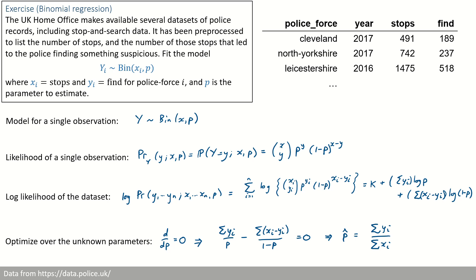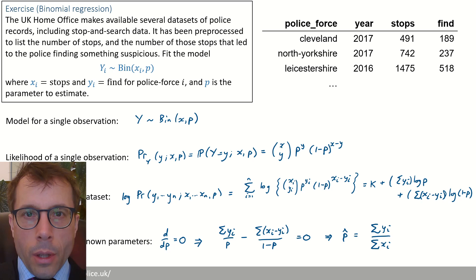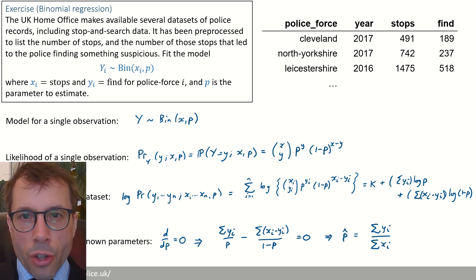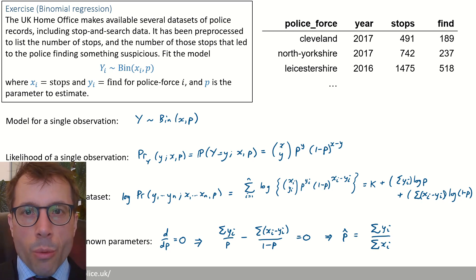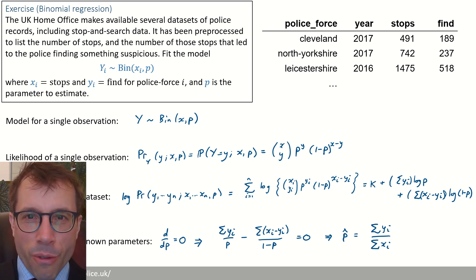Let's do a quick sanity check on the answer. Xi was the number of stop-and-searches for police force i, and Yi was the number of stops where they found something suspicious. So the probability of finding something suspicious in police force i should be Yi divided by Xi. To get the average probability across the entire country, we count the total number of stops nationwide, count the number where the police found something, and divide one by the other. It's nice to have a systematic procedure — maximum likelihood estimation — which tells us exactly what to do, so there's no guessing needed.